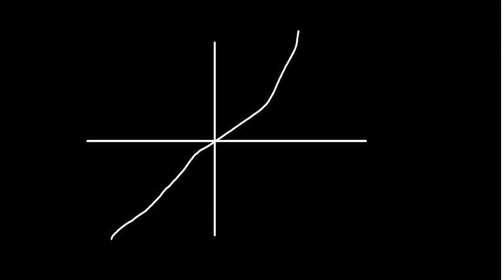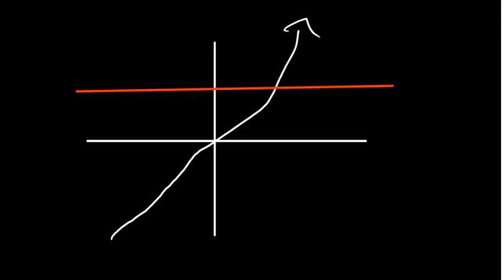You can also use a graph to tell if a function is one-to-one. If you draw a horizontal line and it cuts only one side of the graph, then the function is one-to-one. For example, if the line is only cutting at one point, the function is one-to-one.